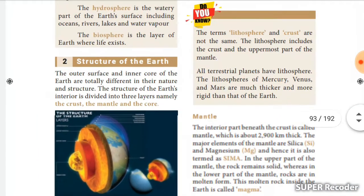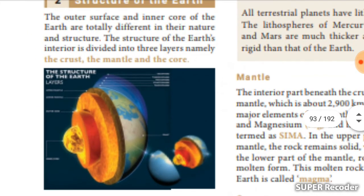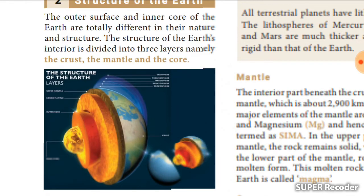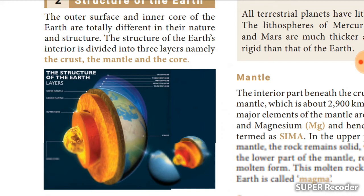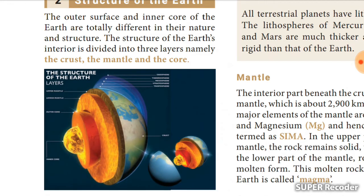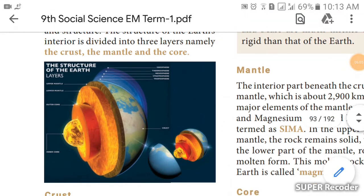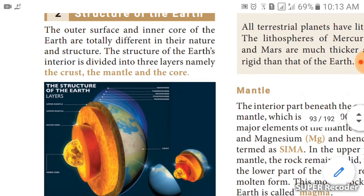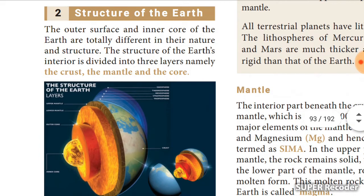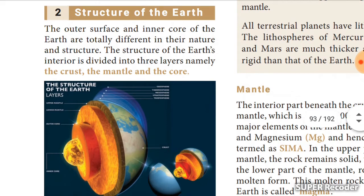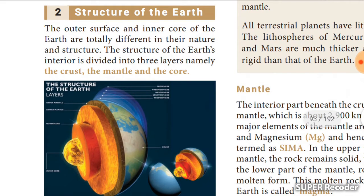Now we are going to learn about the structure of the earth — the interior structure. Just like when you cut an apple you can see layers inside, or when you cut an onion it has many layers — first a thinner layer then a thicker one — the same way the earth also has many layers. The outer surface and the inner core of the earth are totally different in nature.